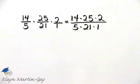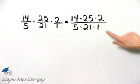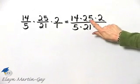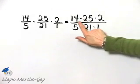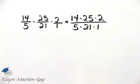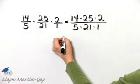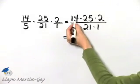And then let's see if we can notice any common factors. I know 5 and 25 have a common factor of 5, so I'm going to write 25 as 5 times 5 in a moment. And I know 21 and 14 have a common factor of 7, so let's just write everything as a product of primes so we can see all of those common factors.